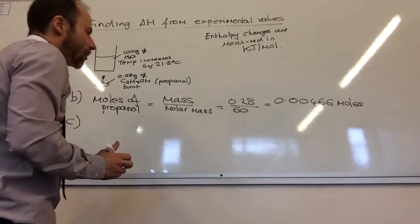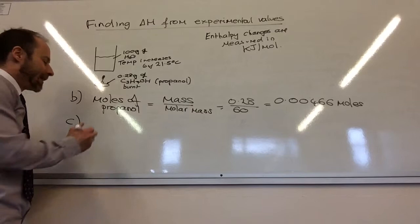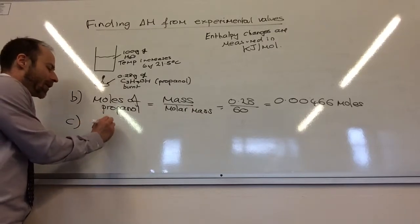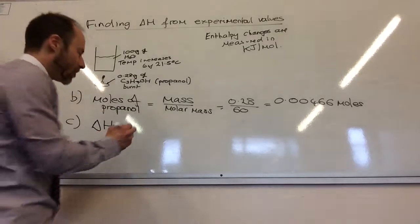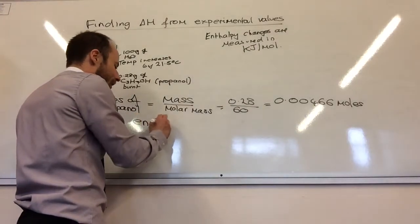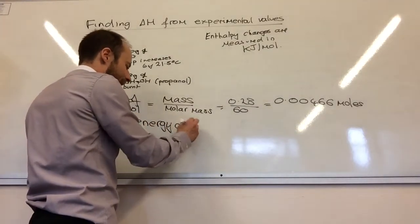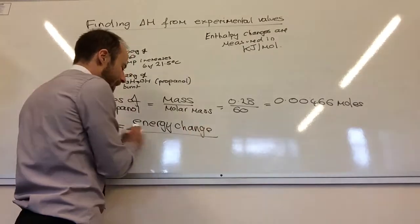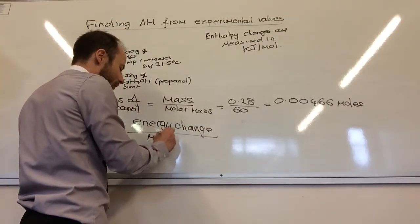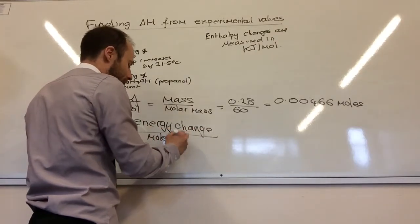The final step is to actually calculate delta H. Delta H is equal to the energy change, which we worked out in part A, divided by the moles burnt.